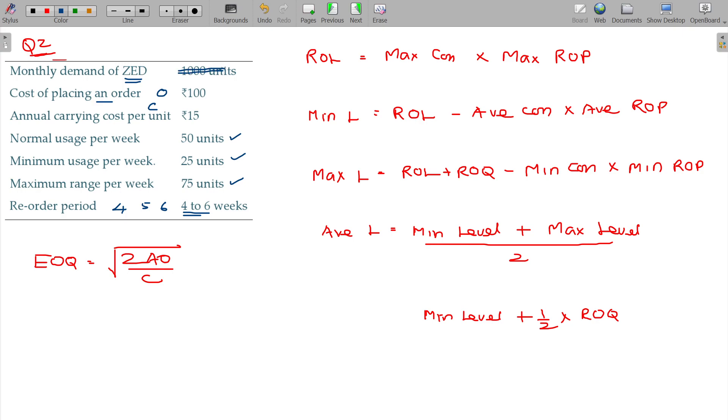This is of no use. So, 2 into what is the annual consumption. On average you consume 50 units, am I right, per week. Usually a year consists of 52 weeks. So per week 50 units in general.